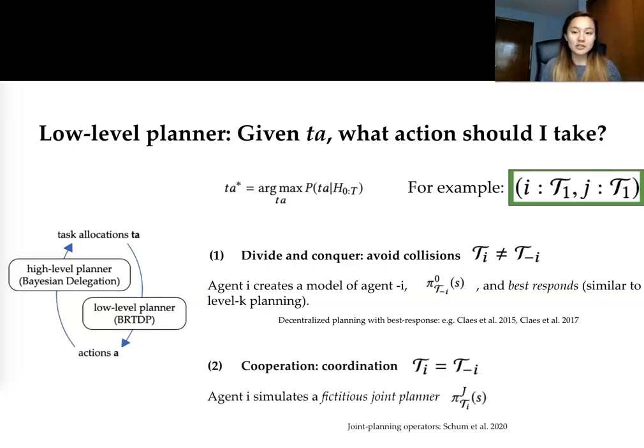The next coordination problem that our low-level planner is trying to solve is assuming that we are working on the same subtask, how exactly do we coordinate our movements? In this case agent i simulates a fictitious joint planner where the action space of this joint planner is the combination of both my action space and your action space. Given a joint plan, agent i then executes its part of that joint plan.